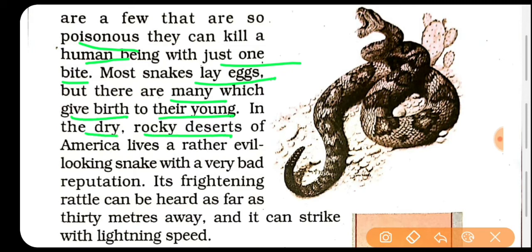In the dry rocky deserts of America, ek bahut hi bhadda dikhne wala — evil looking — saap bhi rehta hai, aur jis ki reputation bhi bahut buri hai. Yeh bahut hi daraawana hai jo iski rattle hai. Rattle kya hota hai — jab snake chalta hai jo sound aati hai, that is a rattling sound. Us sound ko 30 meter door tak bhi suna jaata hai aur woh bahut hi daraawani hoti hai. Aur yeh strike karta hai jitni speed se light switch on karne par poore ghar mein roshni ho jaati hai.